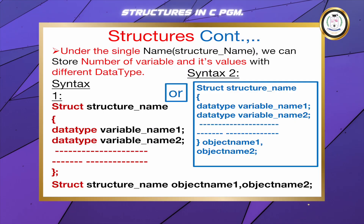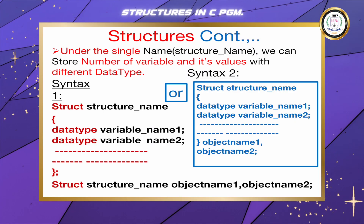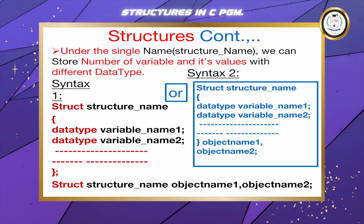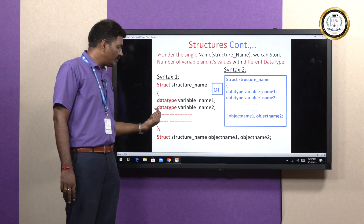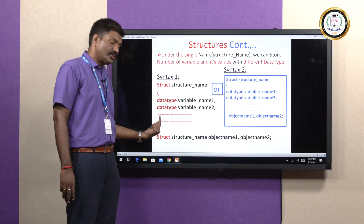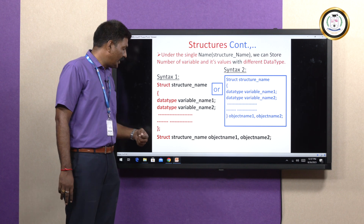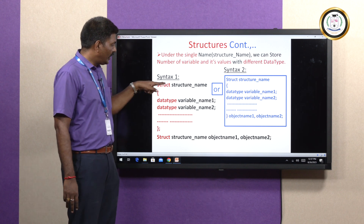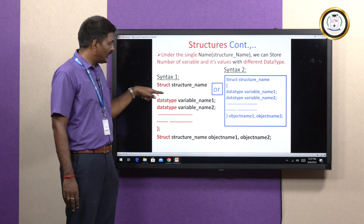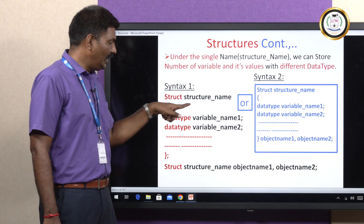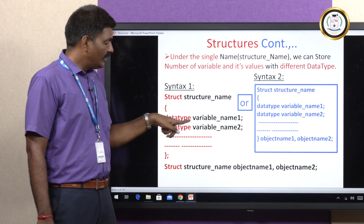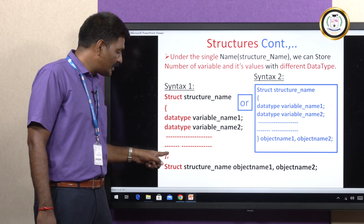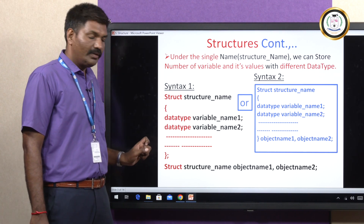The second member variable is integer roll number. Then, percentage belongs to float, so float percentage. As per this example, the structure student detail has: name, roll number, and percentage. Then close brace and semicolon.